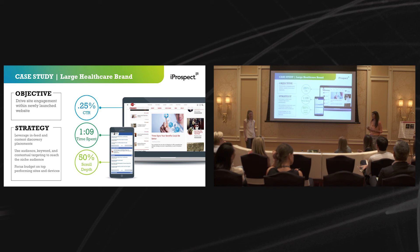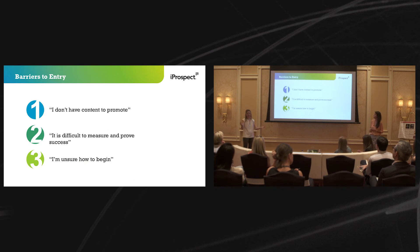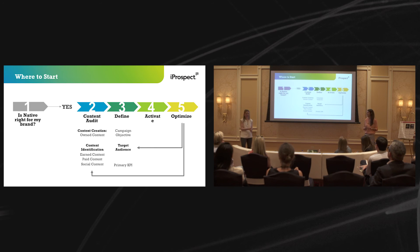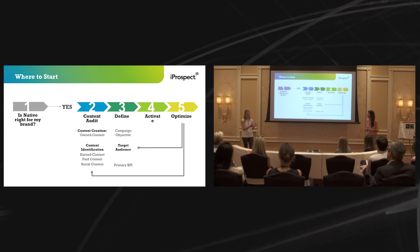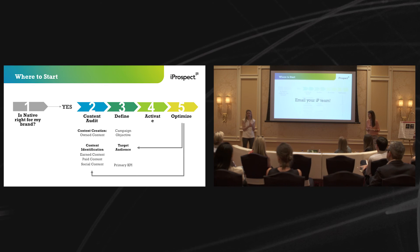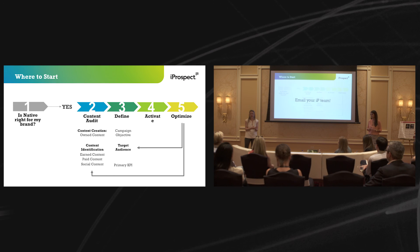Hopefully by now you're all thinking native is amazing. The last barrier is being unsure where to begin. We have a team with experience in this, and more importantly, we have a process and an approach. The most important place to start is understanding what kind of content you have — whether owned, curated, or identifying content that's out there around your brand. From there we define campaign objectives. Remember, you do have iProspect; lean on your client services team to help navigate not just the content journey but also how to amplify it and make the most of your campaign.